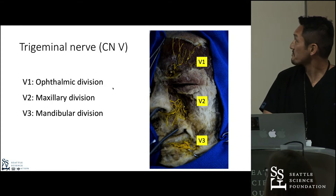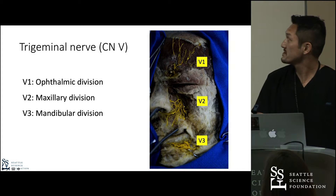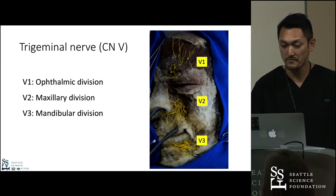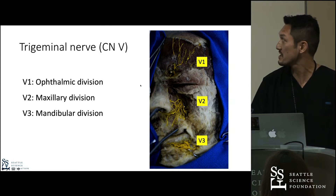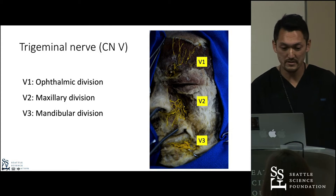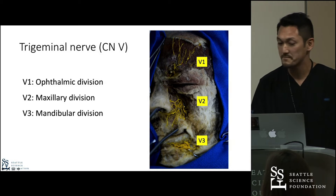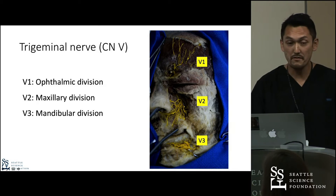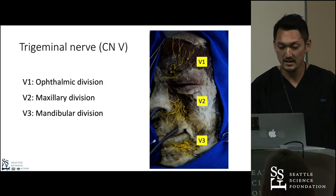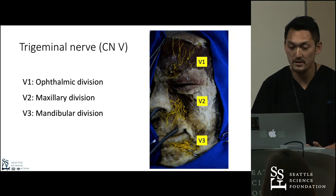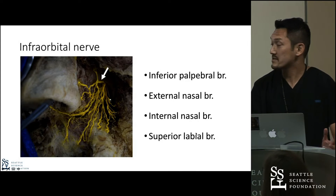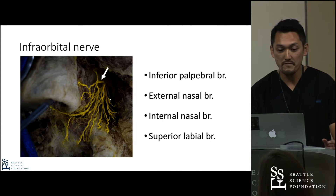The V1, the ophthalmic division, comes out from the supraorbital foramen or notch. V2, the infraorbital nerve, comes out from the infraorbital foramen. V3 comes out from the mental foramen. The nerve is called the mental nerve. This is a branch of V2, the infraorbital nerve.